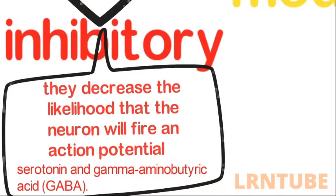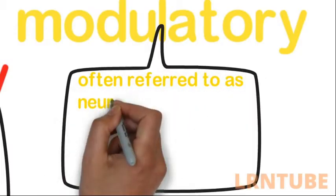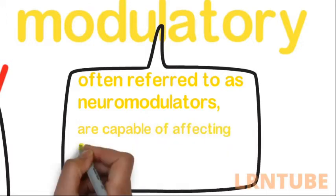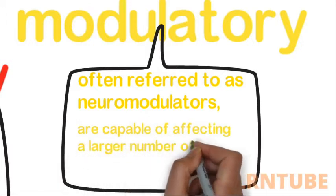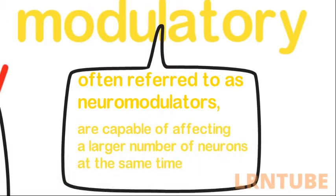Lastly, we have modulatory neurotransmitters. These are often referred to as neuromodulators and are capable of affecting a large number of neurons at the same time. They also influence the effects of other chemical messengers.